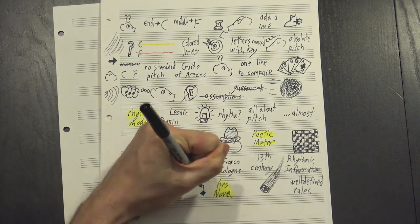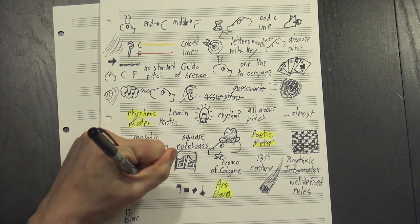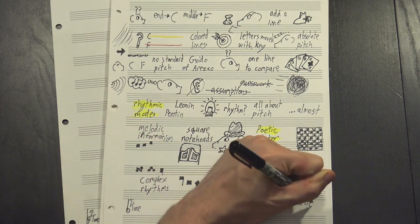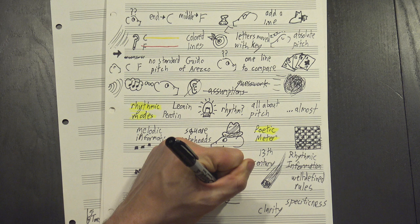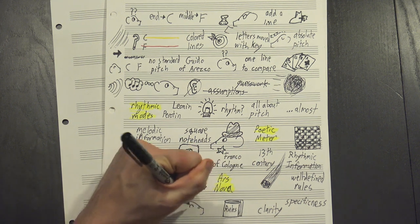They were even further developed during the Ars Nova period, which featured the addition of more note values, letting us write more complex rhythms, and a push towards specificness and clarity in notation, making the rules for reading rhythms simpler and easier to follow.